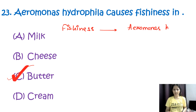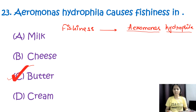The fishiness flavor in butter is caused by Aeromonas hydrophila. There are other off-flavors such as ester-like flavor caused by Pseudomonas fragi, and rancid odor caused by lipase-producing organisms. For the fishiness flavor specifically in butter, the correct option is C.